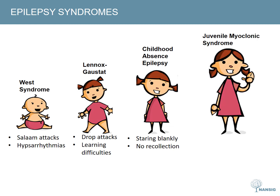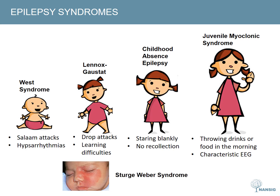In adolescence, juvenile myoclonic epilepsy becomes more prominent. A typical history is of throwing drinks or cornflakes in the morning as it is mostly myoclonic seizures that occur soon after waking. It has a characteristic EEG and treatment is good but lifelong. The last significant clinical epilepsy syndrome is Sturge-Weber. This is associated with a facial lesion — a port wine stain — in the distribution of the trigeminal nerve, as you can see in the photo. For children less severely affected, deterioration rarely occurs beyond five years of age.